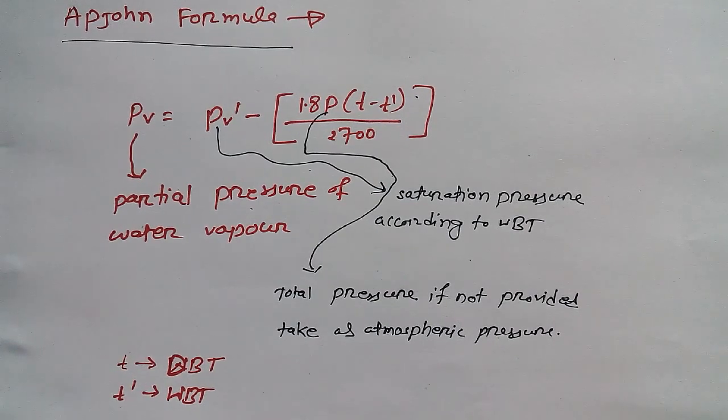Basically, pv equals pv dash minus 1.8p times t minus t dash by 2700. If you are getting confused anywhere in this formula, what you have to do is solve a few problems related to this formula.